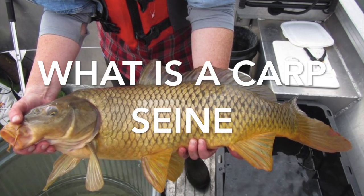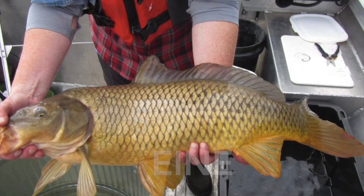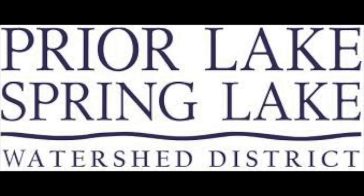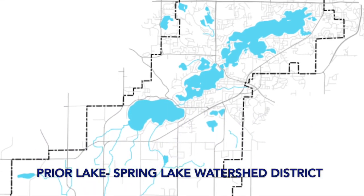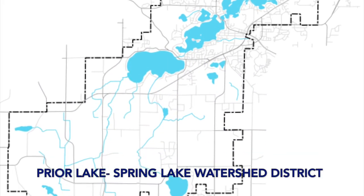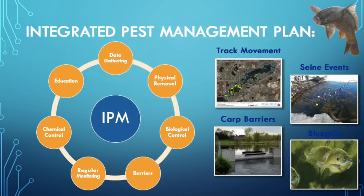In 2002, Spring and Upper Pryor Lake were listed on Minnesota's List of Impaired Waters. As a result, the district put together an Integrated Pest Management Plan, or IPM, for Common Carp in 2017 to reduce the carp population and help restore our impaired waters.